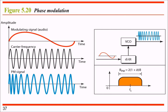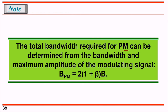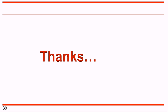Phase modulation (PM) modulates the phase of the carrier signal using the derivative (d/dt) of the modulating signal. The carrier signal is subjected to a phase shift proportional to the amplitude of the modulating signal. The PM bandwidth formula is B_PM equals 2 times (1 plus β) times B. In phase modulation, the frequency represents the phase - there is no direct phase change visible, rather the frequency changes represent the phase shifts.